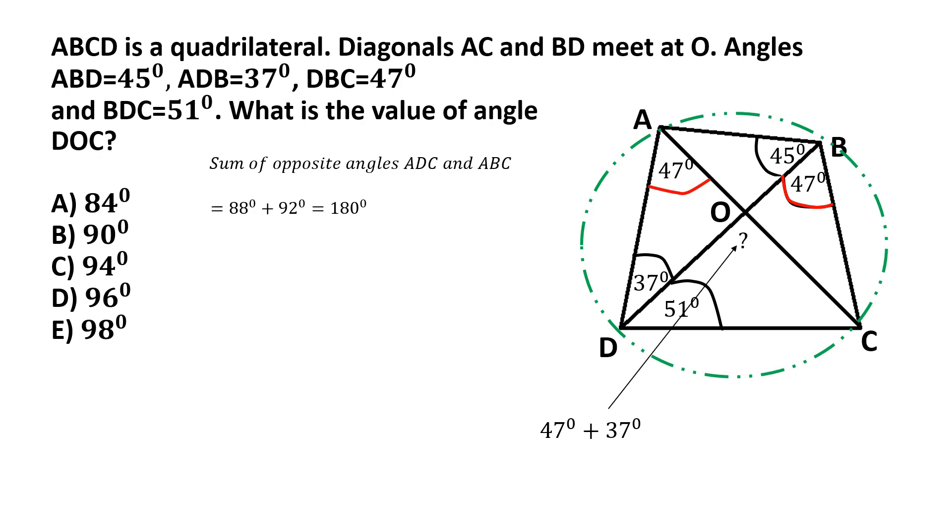So if we take the two interior opposite angles which are namely 47 and 37, we can just sum them up and that will give us our angle DOC, the angle that we are asked to find out. So that will be simply 47 plus 37 which comes to 84 degrees. So the correct answer in this case will be option A, 84 degrees.